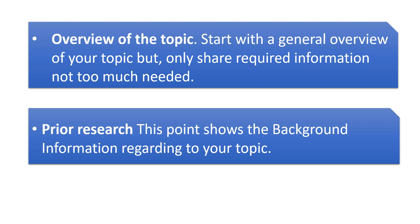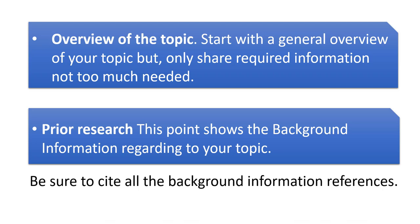Prior research includes both old scholars and modern scholars — what they have done in the background and the information from their research work. If you are writing a simple review paper or article, you can write a few lines; if you are writing a research paper, you can write up to one paragraph for the overview and one paragraph for prior research. Most importantly, be sure to cite all the background information references — references are very important. You should cite the references of each point you are taking from other researchers, because even if you are not copying their work but taking an idea, you should cite.